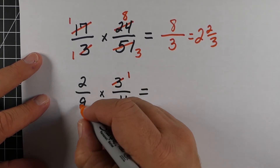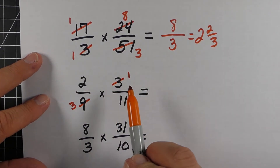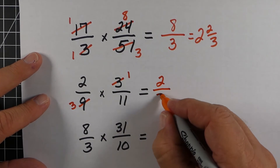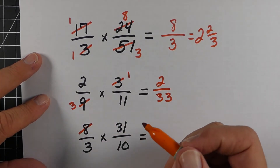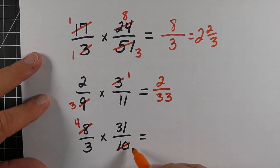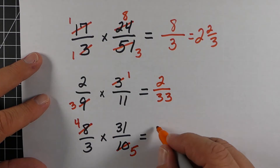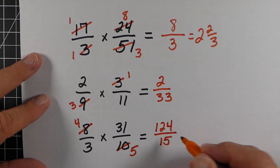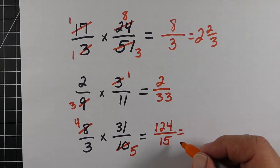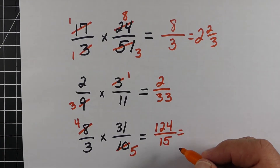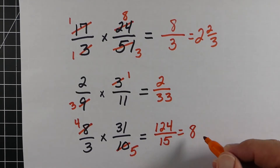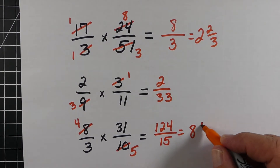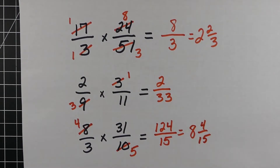Again, we can simplify diagonally here — three went into both those. Nothing goes into 2 and 11 other than 1, so we just multiply across. In this one, the 2 goes into both 8 and 10, and nothing goes into 3 and 31, so we multiply straight across. When we do that, we find 15 goes into 124 eight times with a remainder of four, giving us eight and four-fifteenths.